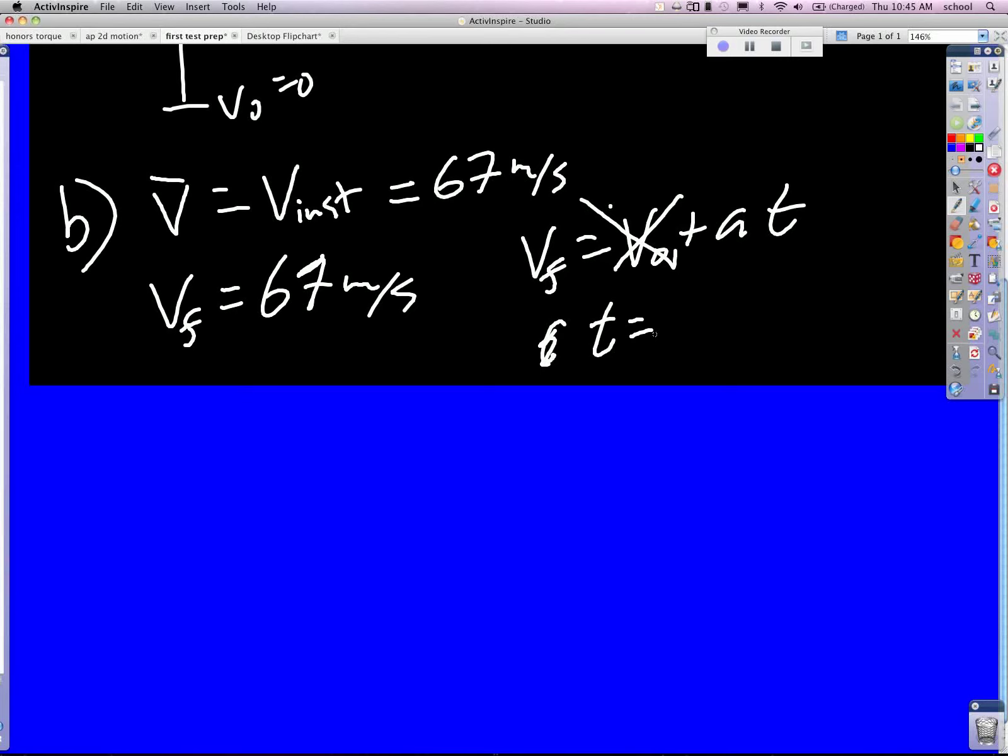So the rocket, at some point, right there, the velocity is 67 meters per second. We need to know the height at that point.